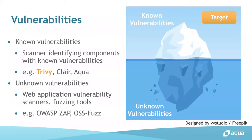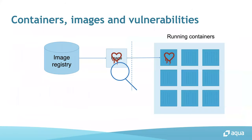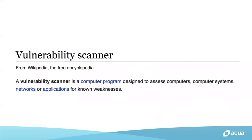So Trivy checks if known vulnerabilities affect your environment — its target is known vulnerabilities. We need to prevent containers including vulnerable packages from being deployed to our environment. The good solution is to scan a container image stored in a container registry — this is called shift left. Shift left means we should identify security issues at an early stage. A vulnerability scanner is a computer program designed to assess computers, systems, networks, or applications for known weaknesses.